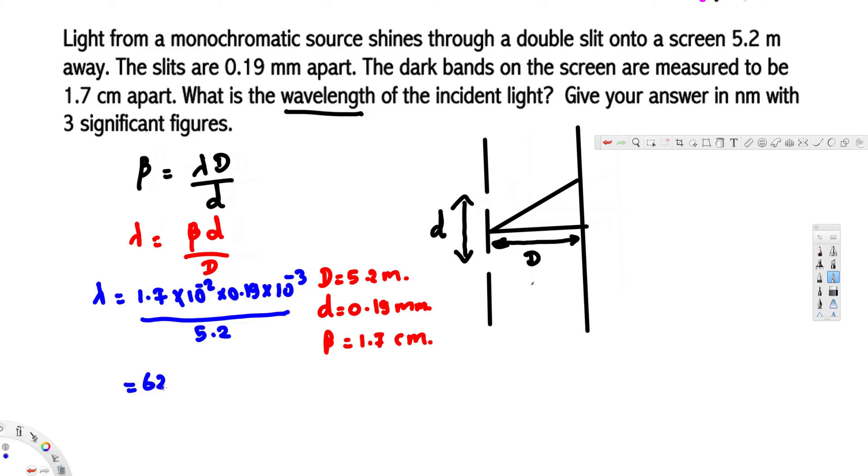If we calculate this, that's going to give us 621.15 times 10 to the power minus 9 meters. In three significant figures and nanometers, that's going to be 621 nanometers, and that's our final answer. I hope this helps. Thanks for watching.